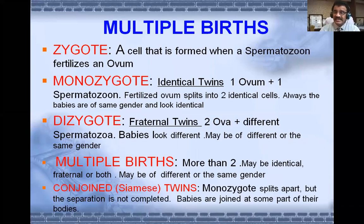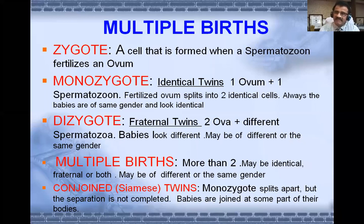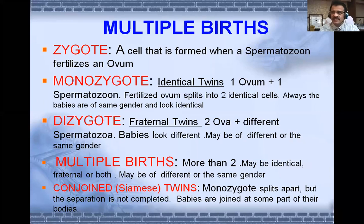Apart from twins and multiple births, there are conjoined babies, also called Siamese babies — babies attached to each other. Siam is the older name of Thailand, where conjoined babies have been found more frequently due to atmospheric circumstances. In monozygotic twins, if the split is incomplete, the babies remain joined at some part of their bodies. They can be called 'one or two in one' — conjoined or Siamese babies.